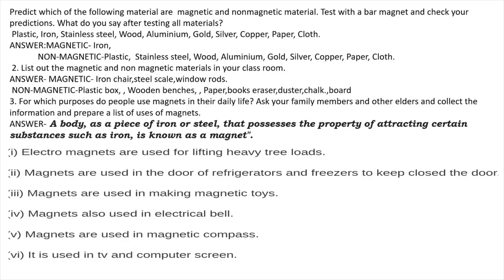For which purpose do people use magnets in their daily life? Ask your family members and collect information. Electromagnets are used for lifting heavy loads. Magnets are used in doors of refrigerators and freezers to keep the door closed. Magnets are used in making magnetic toys, in electrical appliances, and in magnetic compasses. They are also used in TV and computer screens.